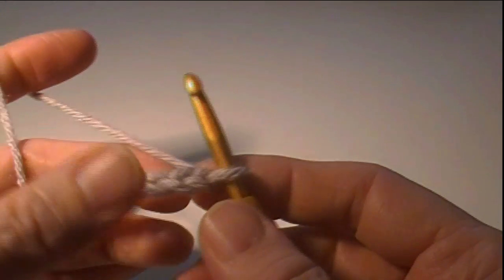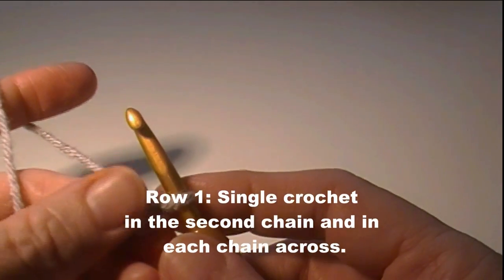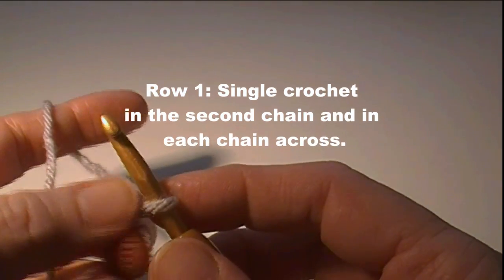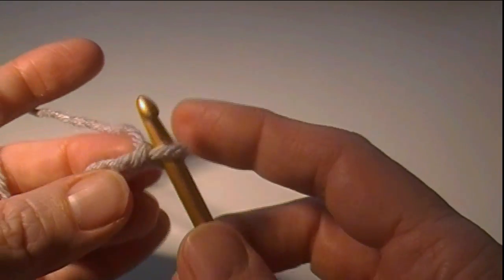Alright, we have 37 chains and now we're going to single crochet for row one. Single crochet in the second chain from the hook and each chain across the row.